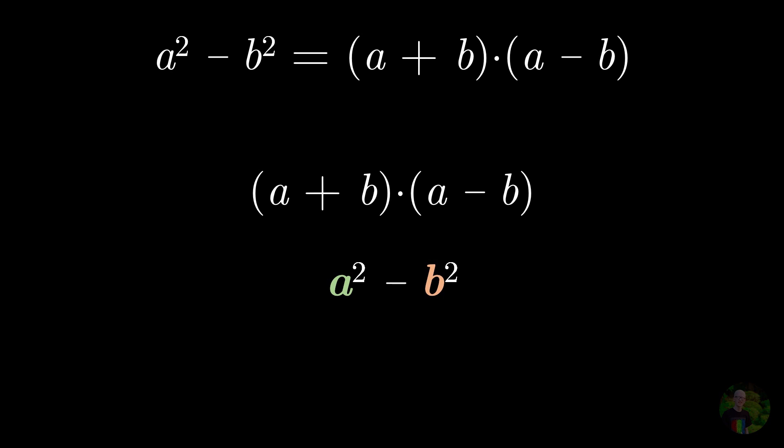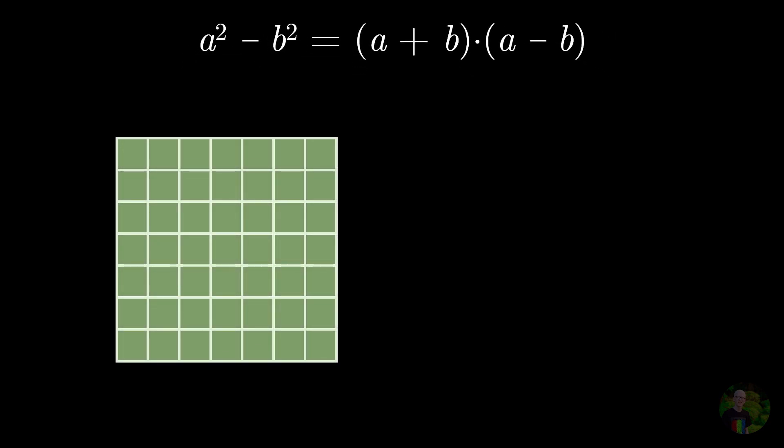So we just did the algebra, but it's not really clear what actually happened. So let's do that intuitively. For that, we will take a square of side length a, so that is a squared, and let's suppose that there is a square inside of it with a side length b.